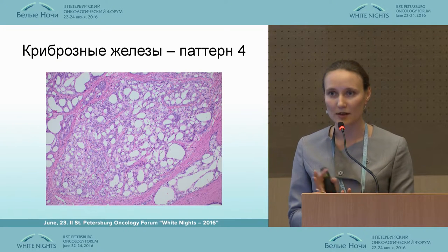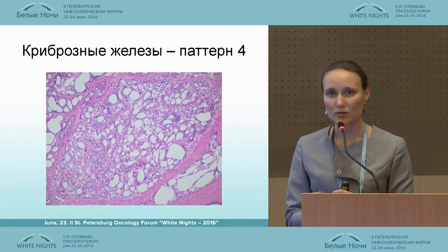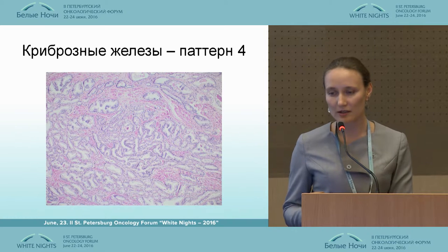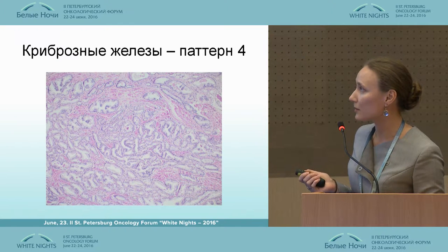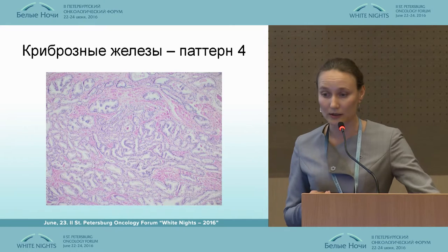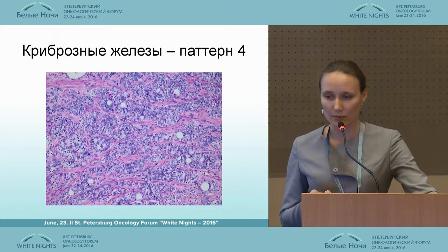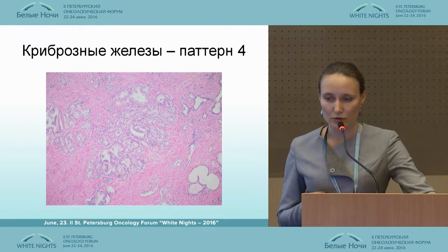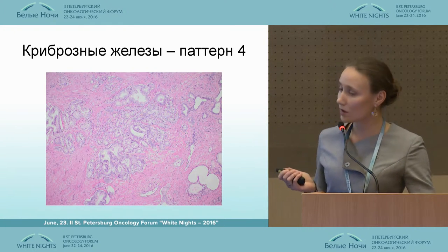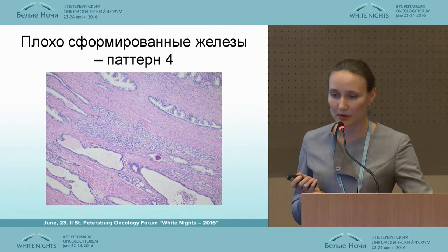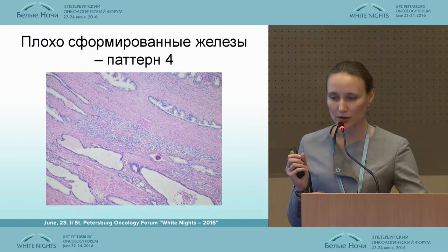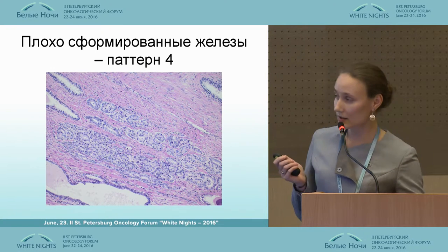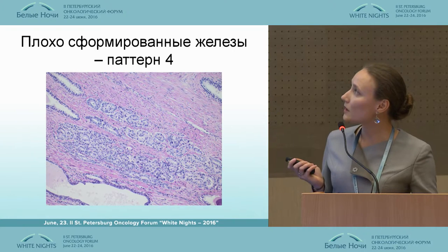Each cribriform structure, notwithstanding their size and regularity, is now included in pattern 4 — including big size cribriform and irregular glands, which are also included in pattern 4. This applies to small size cribriform and cribriform of different sizes in one area, as well as poorly formed glands with areas showing different distances between cells. These can be not only cribriform structures.